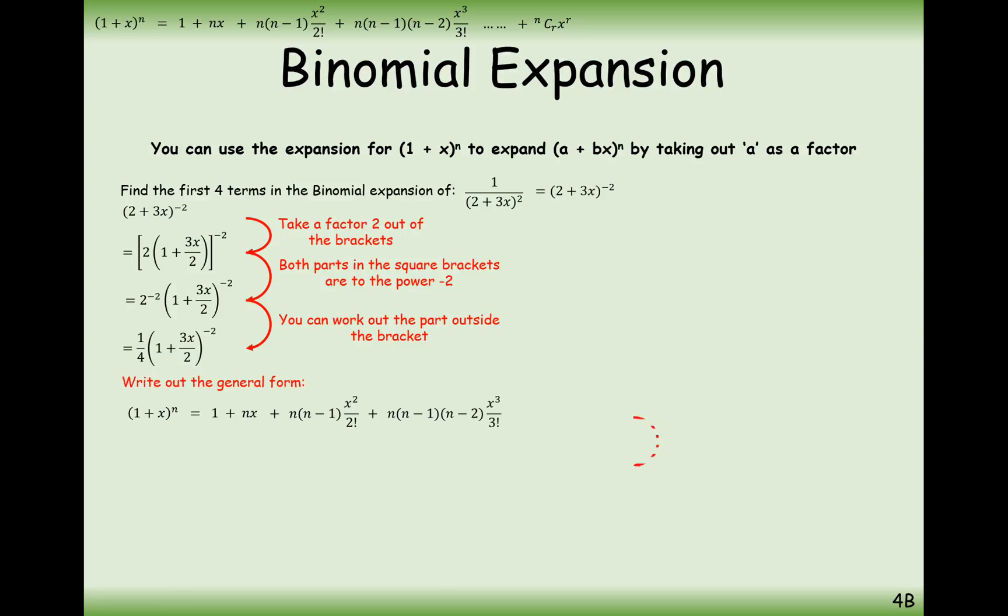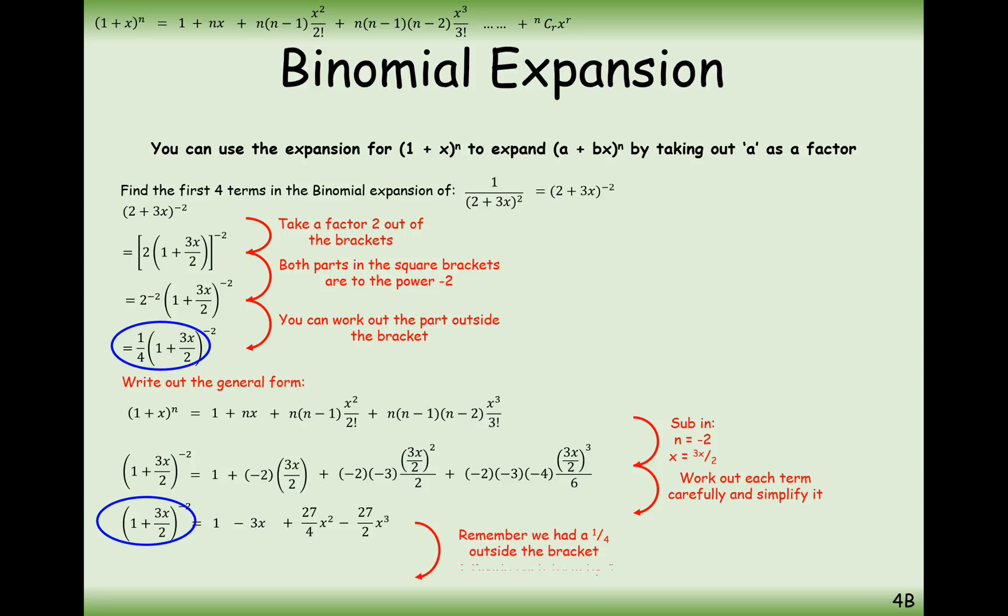So 2 to the minus 2 is a quarter. And now we can work with our bracket. Substituting this into the binomial expansion and simplifying, the only thing left is to quarter everything because we had a quarter at the front. So divide everything by 4 and we get 1 quarter minus 3 quarters x plus 27 over 16 x squared minus 27 over 8 x cubed.